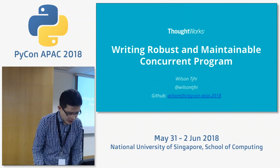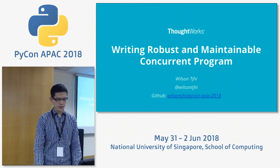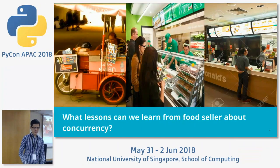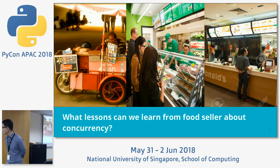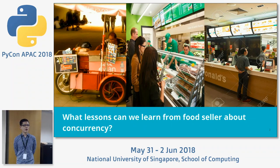The title of the talk is 'Writing Robust and Maintainable Concurrent Programs in Python', but I actually like to refer to it as 'What Lessons Can We Learn from Food Sellers About Concurrency'.